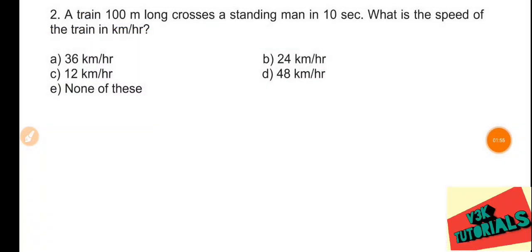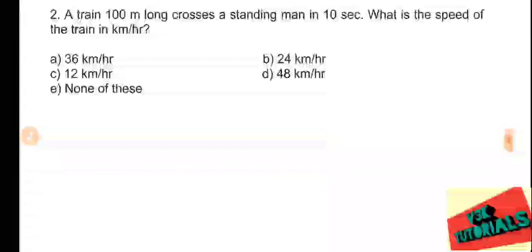Problem number two: a train 100 meters long crosses a standing man — equivalent to a pole — in 10 seconds. What is the speed of the train in kilometers per hour? We have to find the speed using the formula: speed equals distance divided by time.